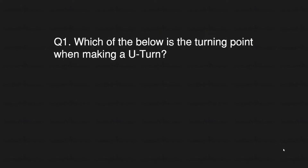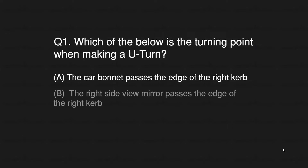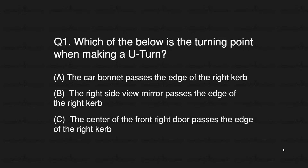Quiz question one: Which of the below is the turning point when making a U-turn? A: The car bonnet passes the edge of the right curb. B: The right side view mirror passes the edge of the right curb. C: The center of the front right door passes the edge of the right curb.